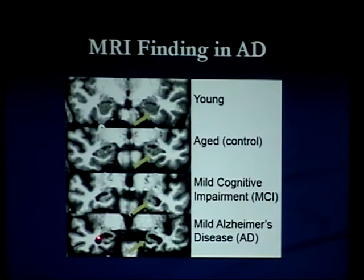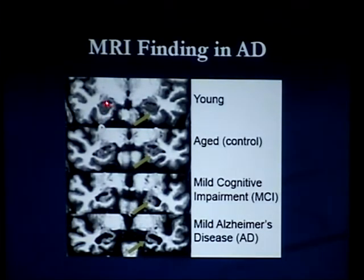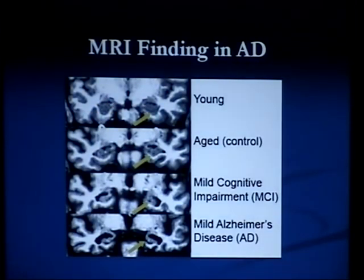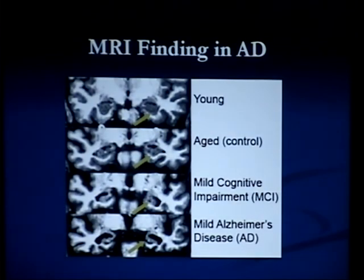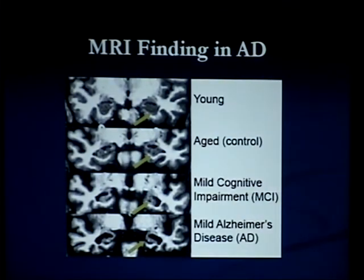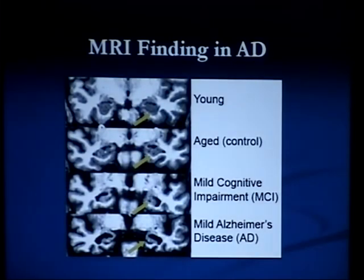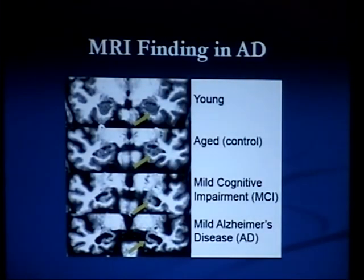And if you look at this black space compared to the tiny little black space here, there's a big difference. So there are MRI findings in Alzheimer's disease — usually they occur later on. But if you really look at the MRI and you do very thin slices through those memory centers, oftentimes you can see some subtle changes, which can help with diagnosis.